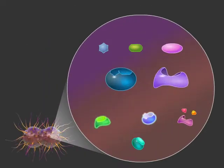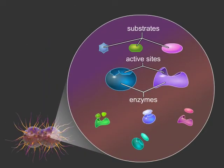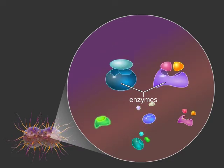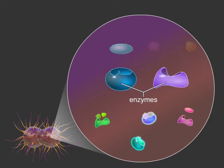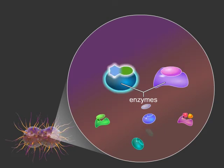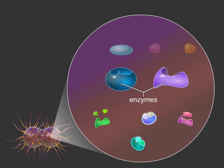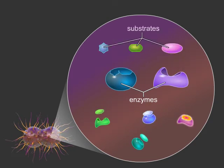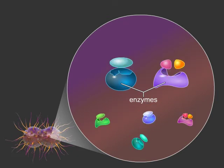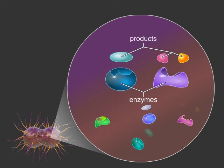Better understanding of this process could perhaps lead to its interference and provide better treatment for these diseases. LPTB is just one example of microbial enzymes that affect human health. Enzymes are specialized proteins that carry out millions of chemical reactions that take place within every cell. Each enzyme binds a specific set of molecules, which we call substrates, and converts them into different molecules, which we call products.